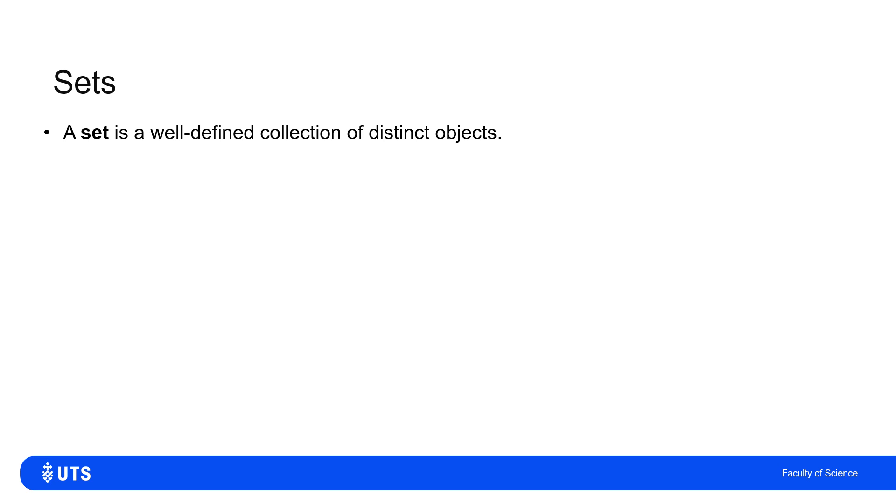A set of things is an idea that you will hear in everyday life, but we want to be quite precise mathematically. So mathematically, a set is this well-defined collection of distinct objects where we call these objects within a set the elements of that set.